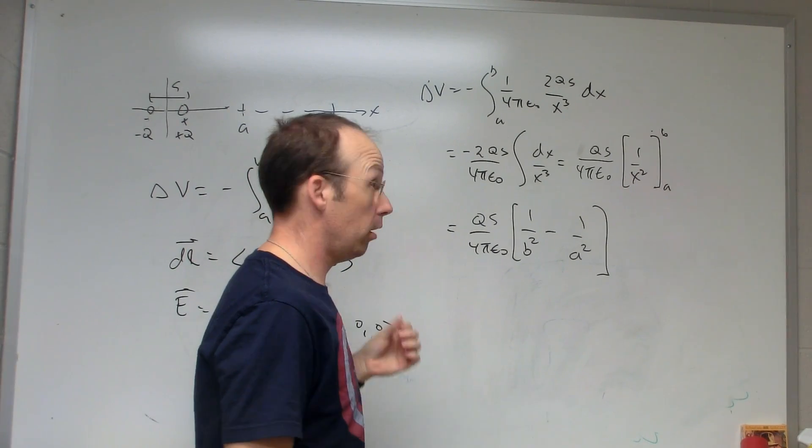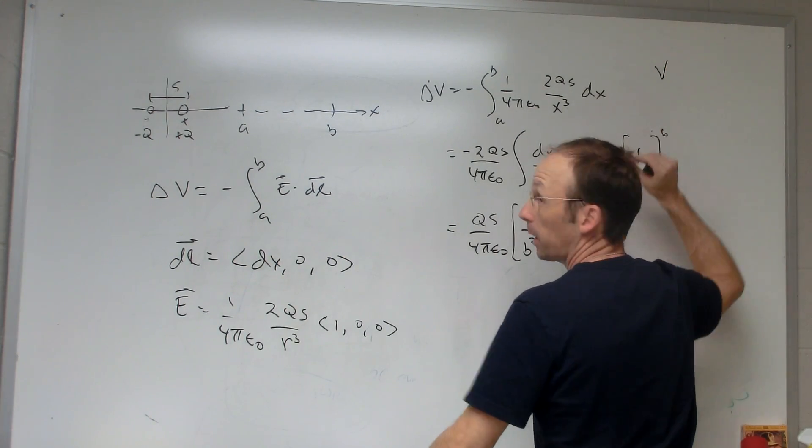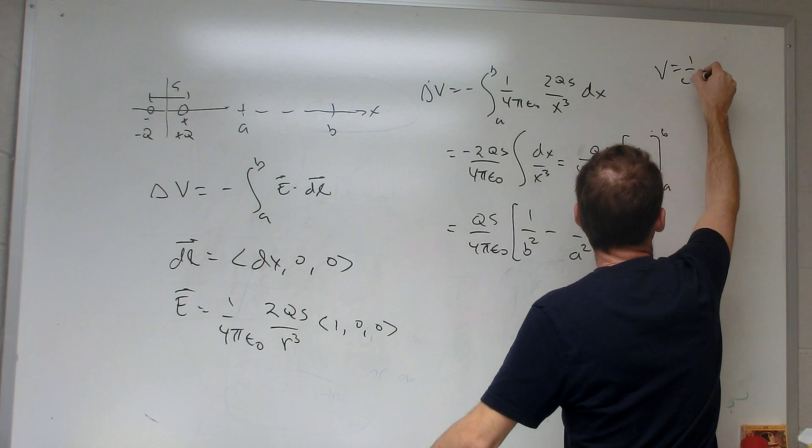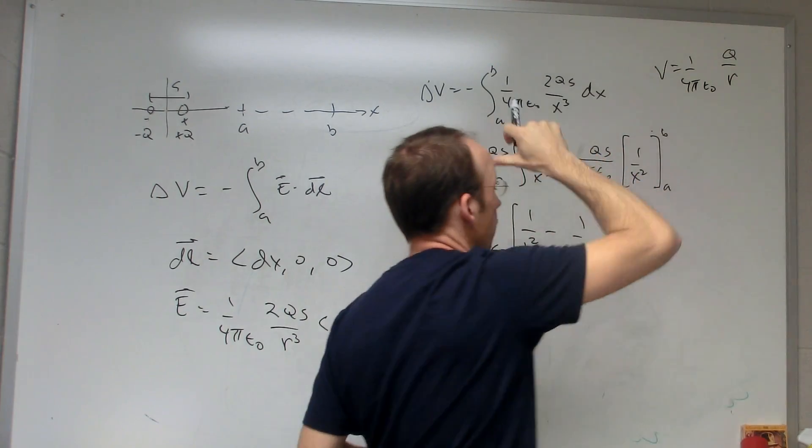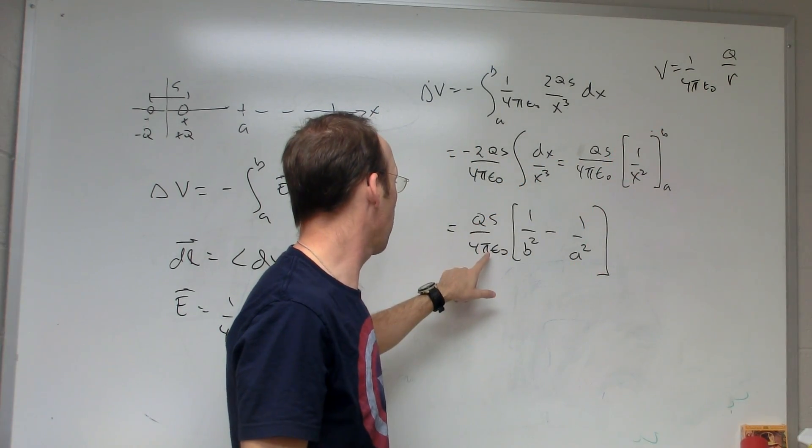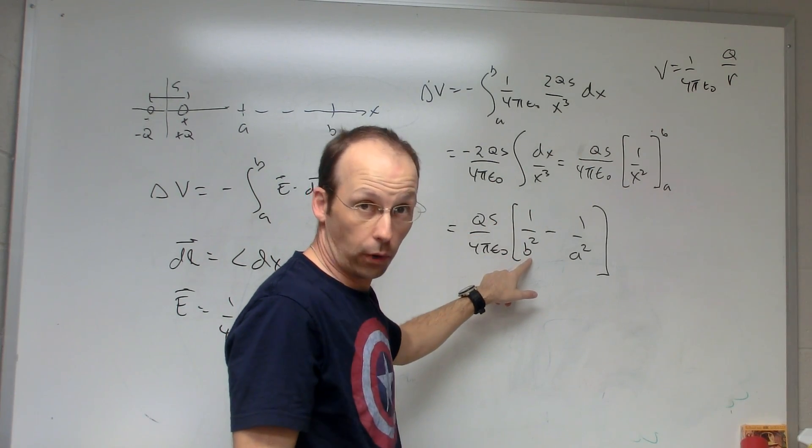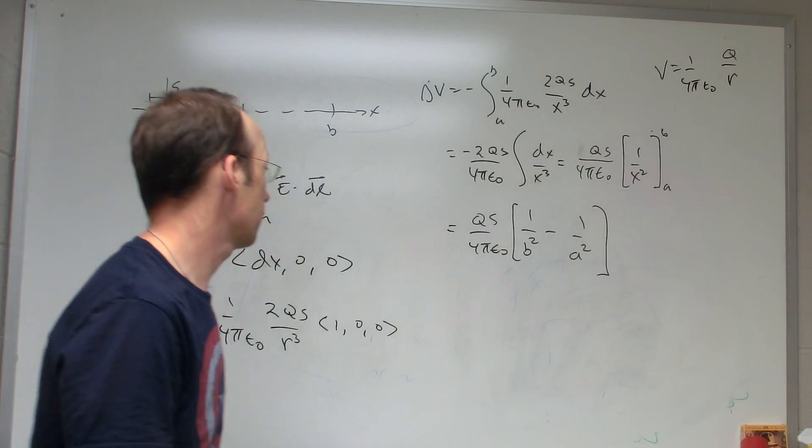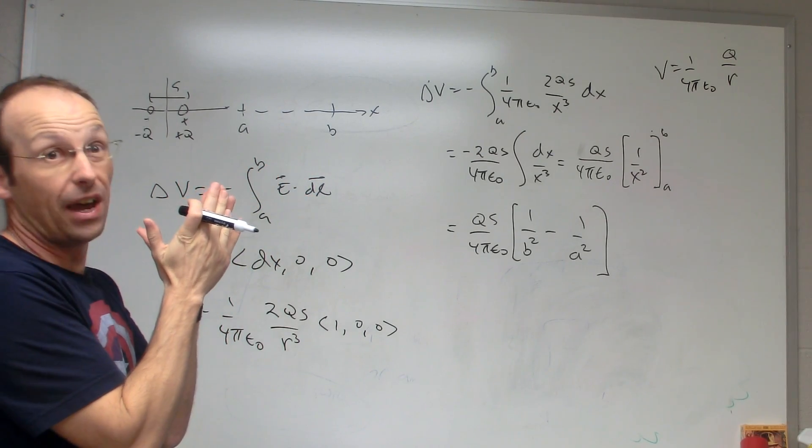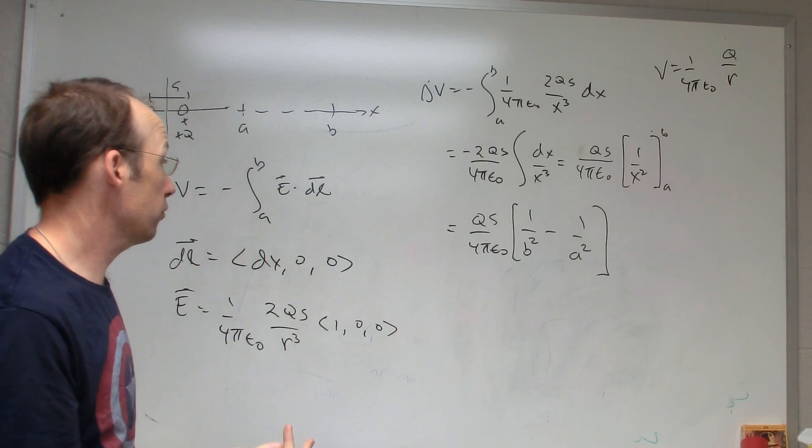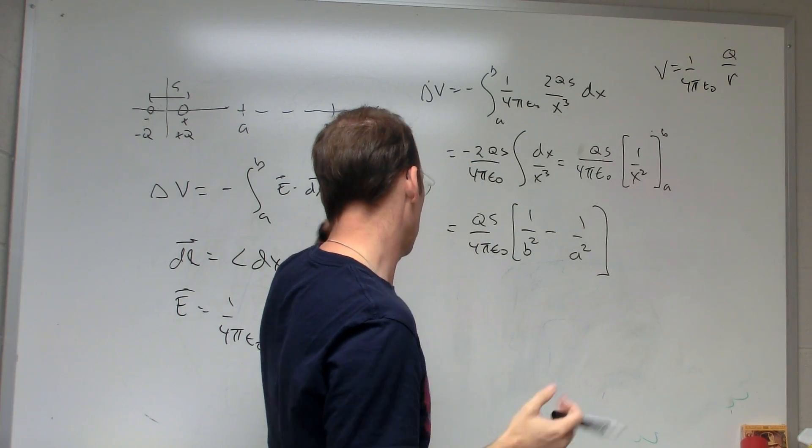Okay, what else can we check? Well, we can check the units. Just as a reference, the potential with respect to infinity for a point charge, 1 over 4 pi epsilon 0, Q over r. Okay, so it should have the same units as that. So I have the 1 over 4 pi epsilon 0, I have the Q, and then I have distance over distance squared, so I get the same units. We can check other things. What if that a and b, what if they're right next to each other? What if a is equal to b? The change of potential should be 0. And so if I get, if I put a there, then this goes to 0. Okay, so that's good.